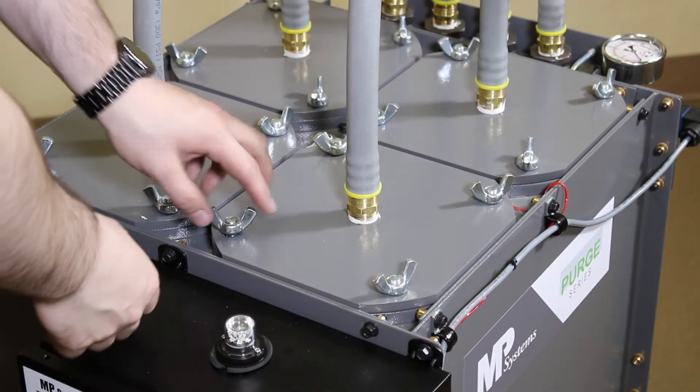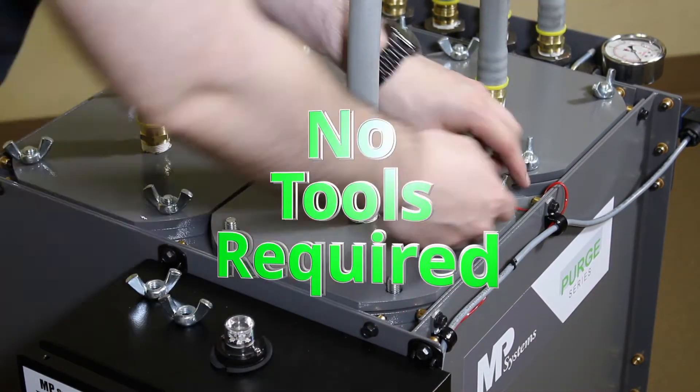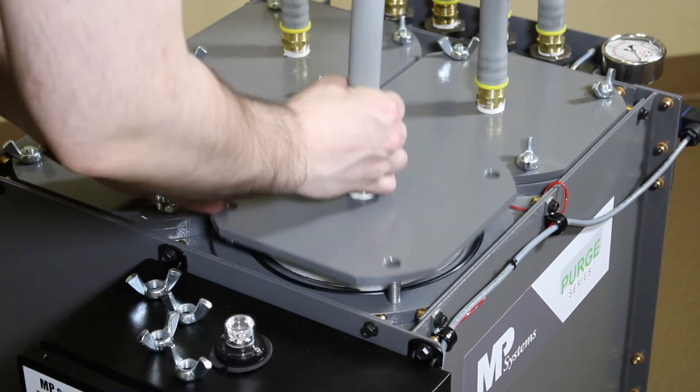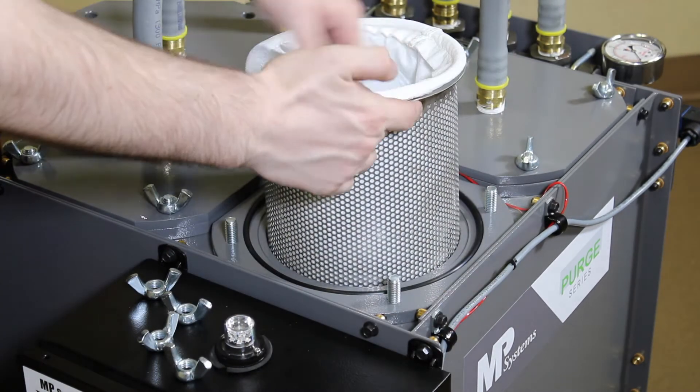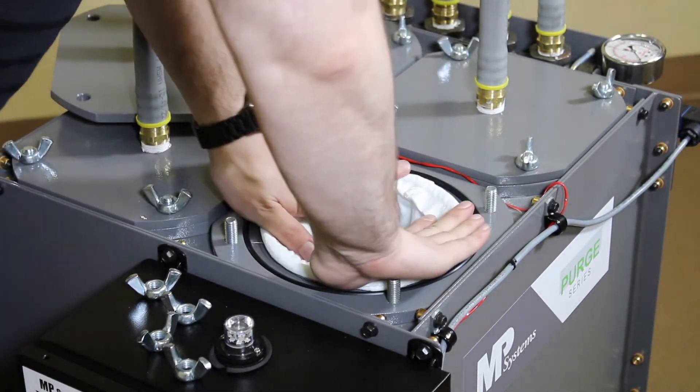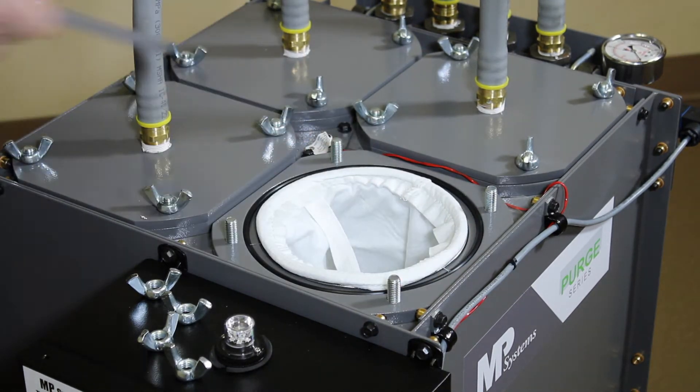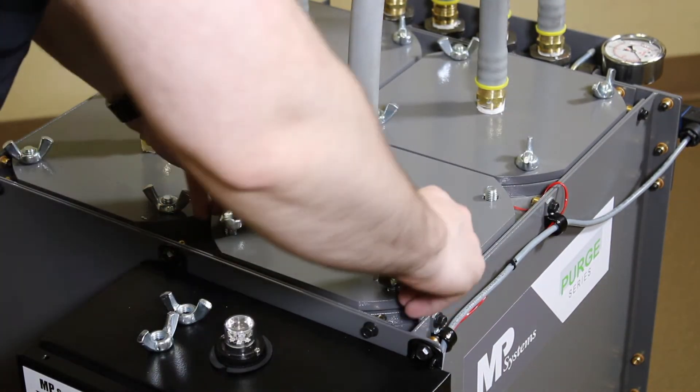The Purge comes standard with four 5 micron filter bags and can hold up to 20 gallons of chips. Filter changes are quick, clean and inexpensive and do not require machine shutdown.